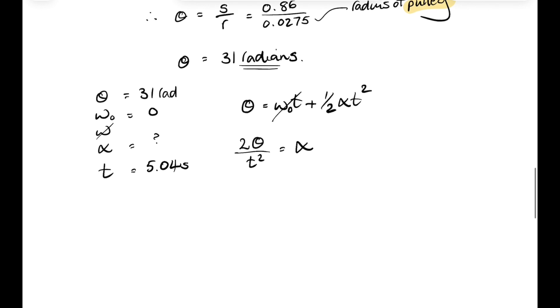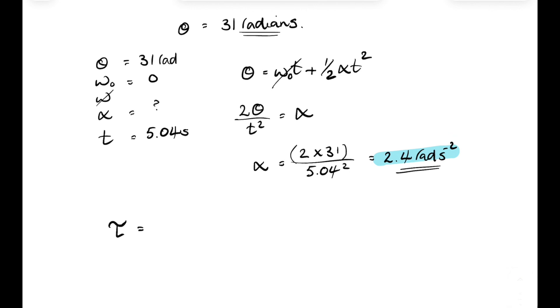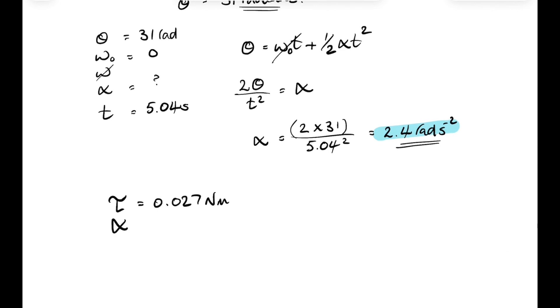And then we can sub in for the values that we know. So alpha will be equal to 2 times 31 over 5.04 squared. And that gives us an angular acceleration of 2.4 radians per second squared. And now we have the torque, 0.027 newton meters, and the angular acceleration of 2.4 radians per second squared.